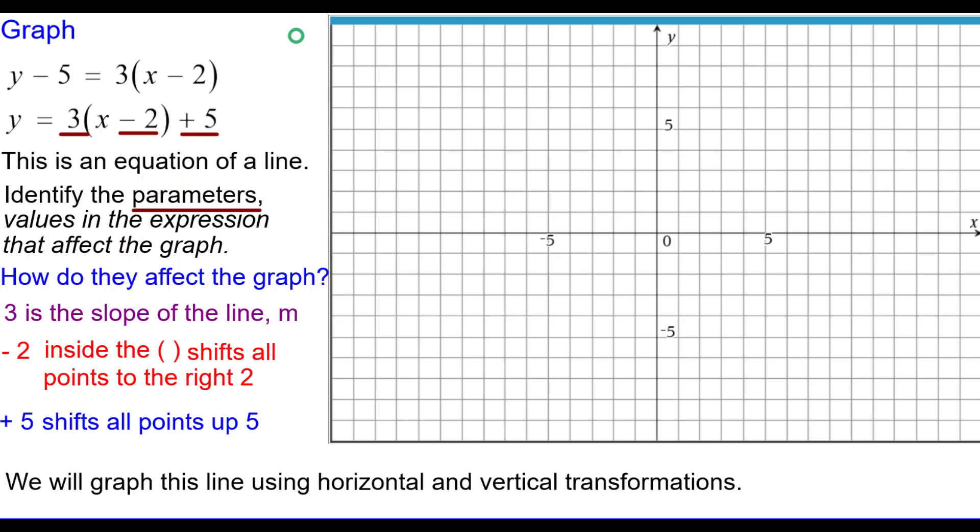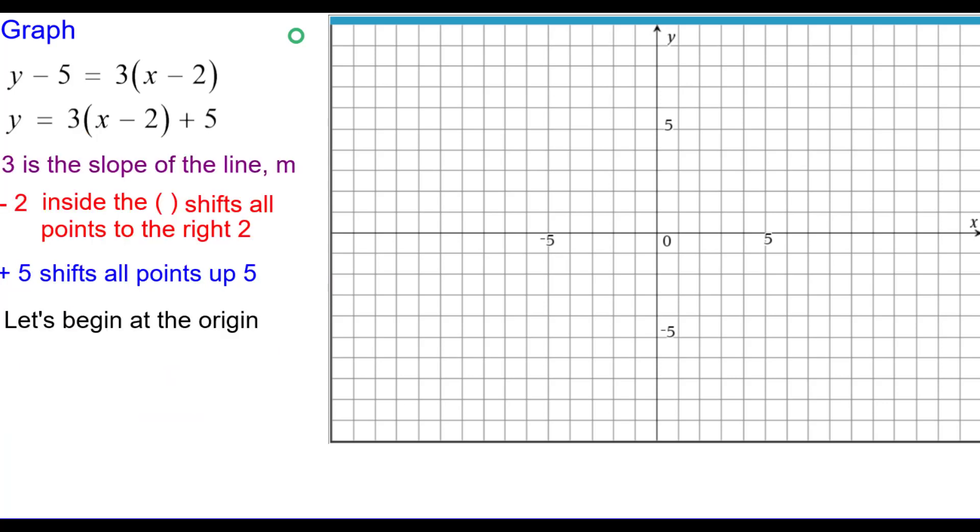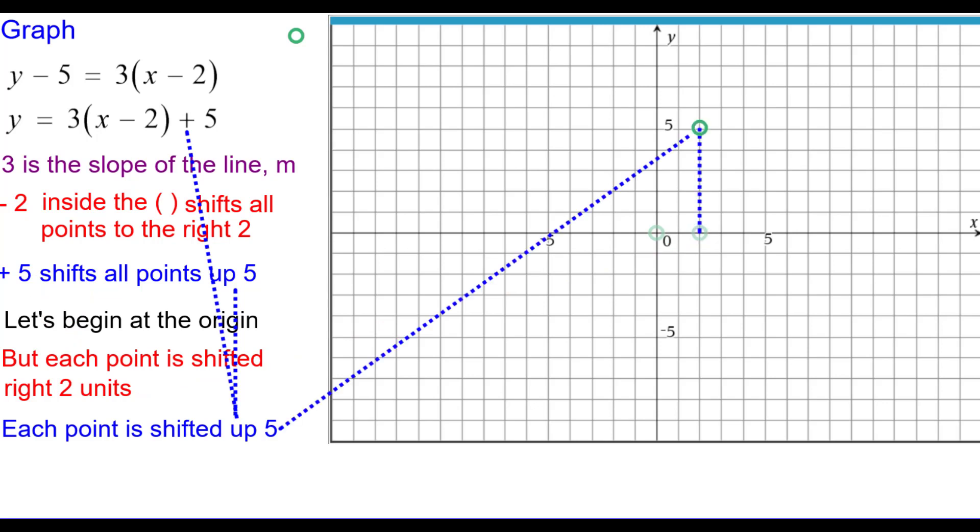So we're going to graph this line using horizontal and vertical transformations. We'll begin at the origin. But each point is shifted right two units. So we'll shift that origin to the right two units. And each point is shifted up five units. So we'll shift that point up five units.